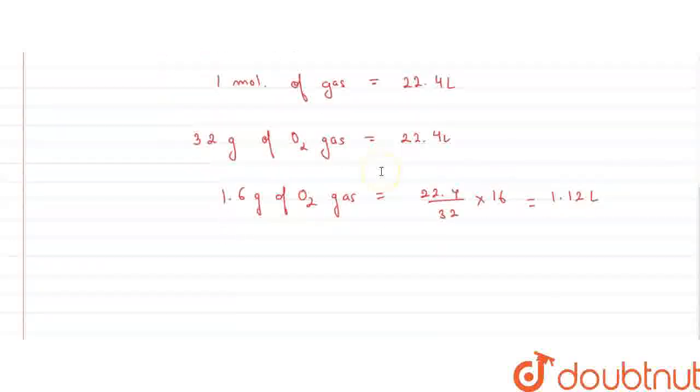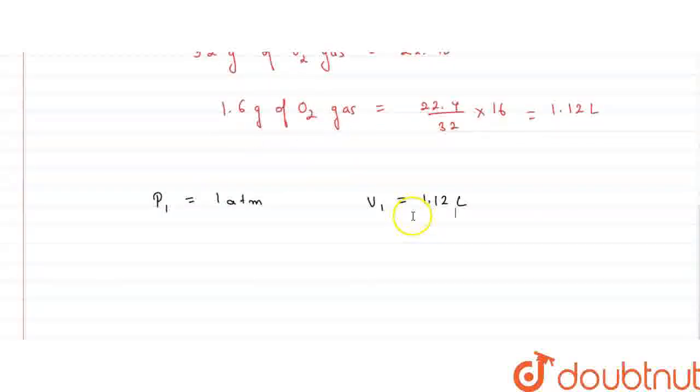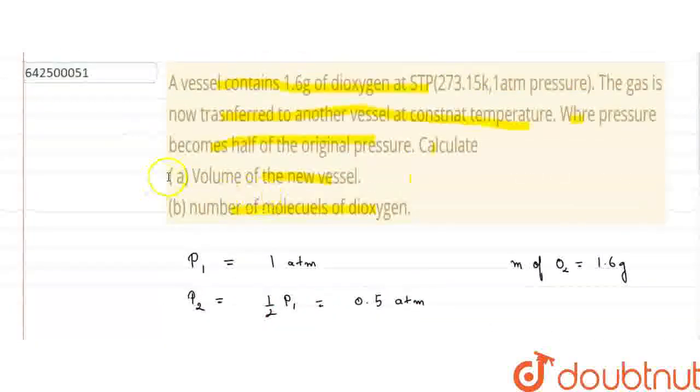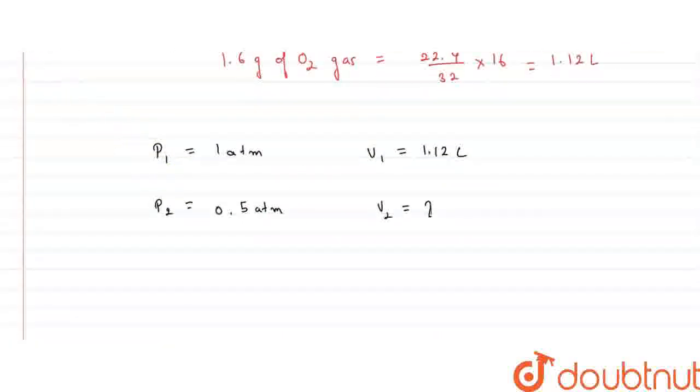So, now we have at pressure 1, which is 1 atm, the volume V1 is 1.12 liter. And for pressure 2, at 0.5 atm, we have to find the volume. Basically, that is what we have to find in the first part. So, let us calculate it using Boyle's law.